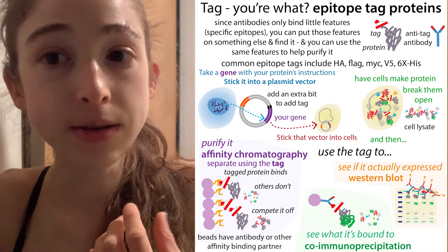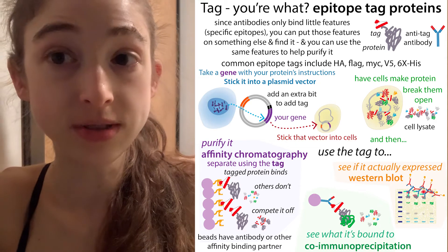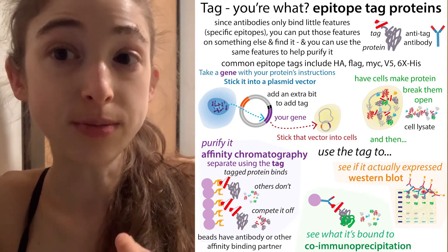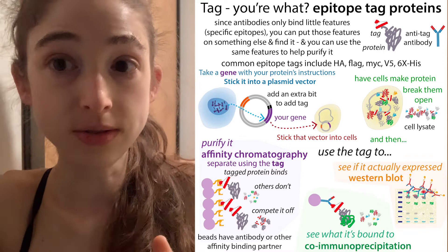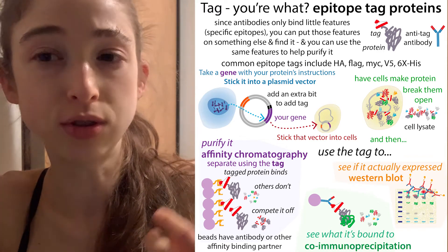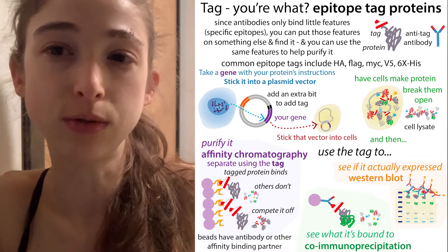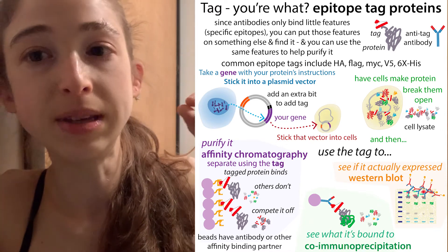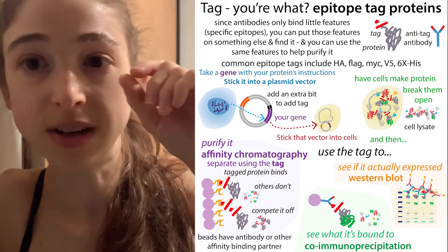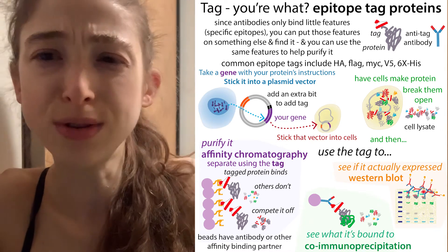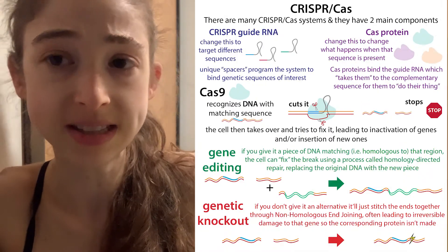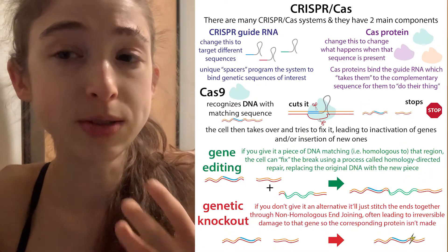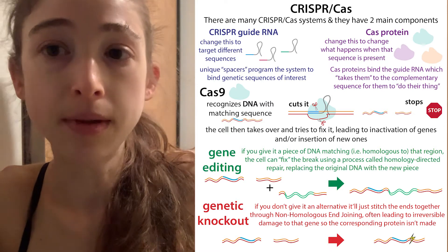There are techniques we can use these days to study proteins endogenously while still being able to track them. Tags are really handy for tracking proteins and pulling them out — for example, using beads with an antibody against the tag to pull them out. You can do all sorts of things if you can tag these proteins. So what we can do is endogenously tag them.